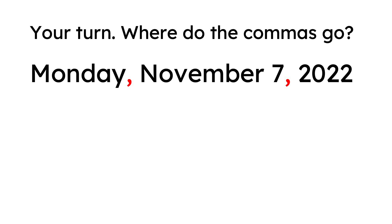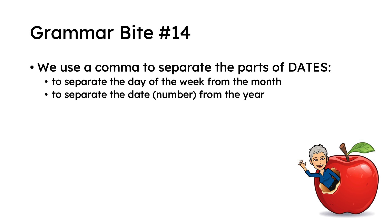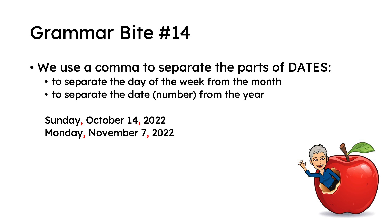Now, I'm going to tell you the rules that go with this. Here's Grammar Bite 14: we use a comma to separate the parts of dates — to separate the day of the week from the month, and to separate the date, or the number, from the year. Here are the examples to help you remember.